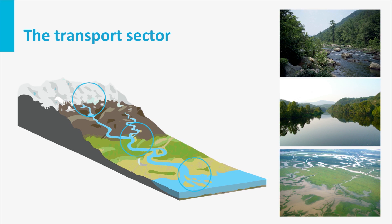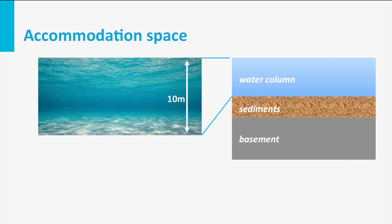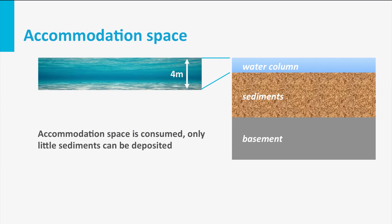A key concept in the analysis of sedimentary succession is that of accommodation space, which is the vertical dimension of the space where sediments can be deposited and preserved. In the marine case, this corresponds to the height of the water column between the sea level and the sea floor. In the case shown in the picture, the accommodation space could be around 10 meters. Sediments delivered to the sea will gradually fill up the accommodation space and the maximum sediment thickness will be comparable to that of the accommodation space, that is 10 meters. In the slide, the remaining accommodation space is 4 meters.